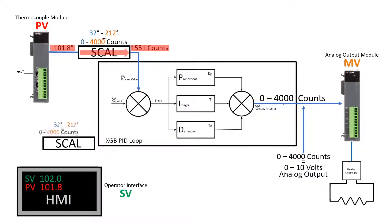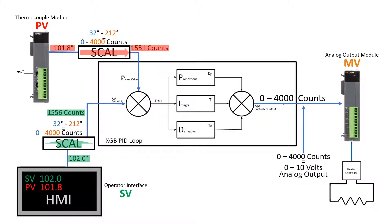The SV is scaled to the same range as the PV. The actual temperature set point is sent from the operator interface device to the PLC for scaling. The difference in the SV and PV provides the PID loop with the error value for loop calculation.